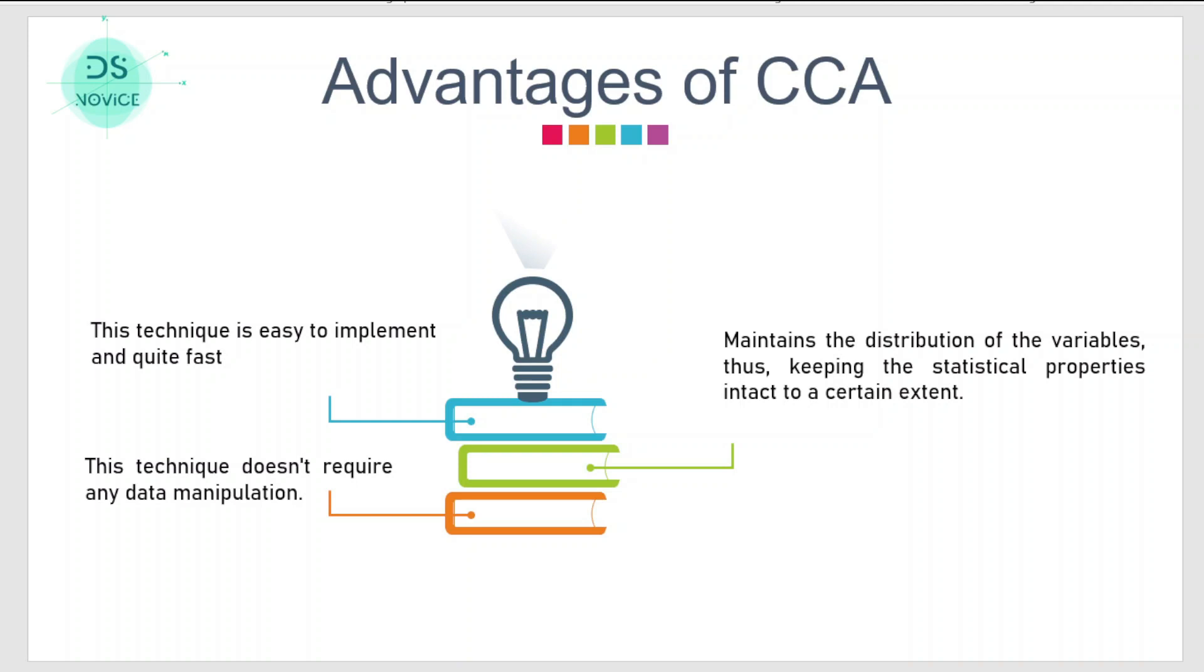We do not have to play around with the data - there are some techniques where we have to do data manipulation like arbitrary imputation, but here we do not have to do these things. Last thing is that this technique maintains the data distribution, which means statistical property do not change, which means the statistical power of the data is intact or this technique does not introduce wrong information if applied correctly.